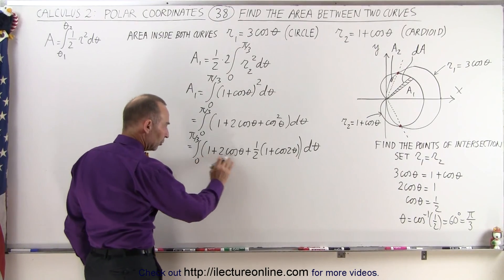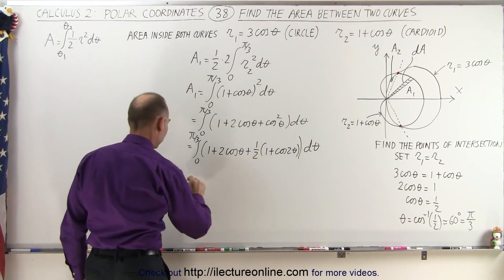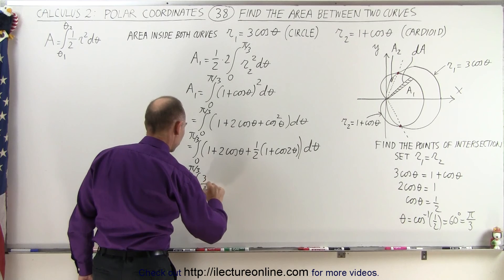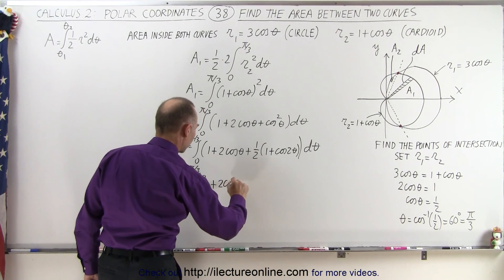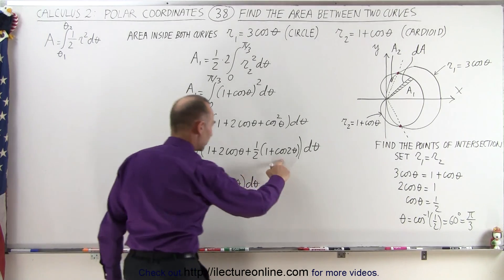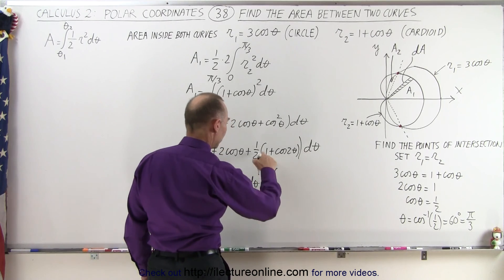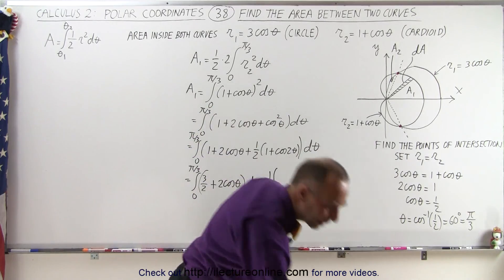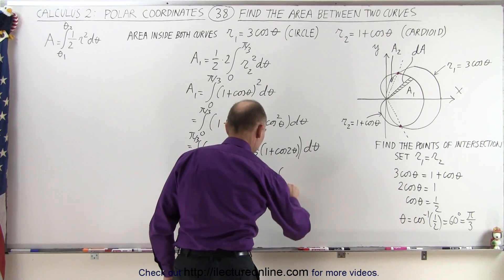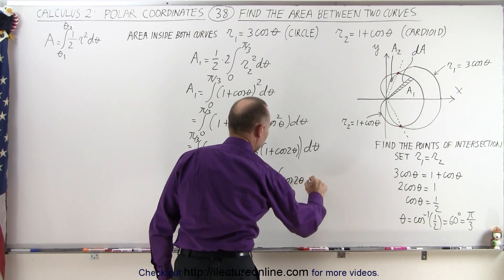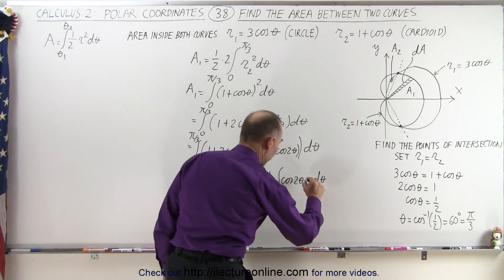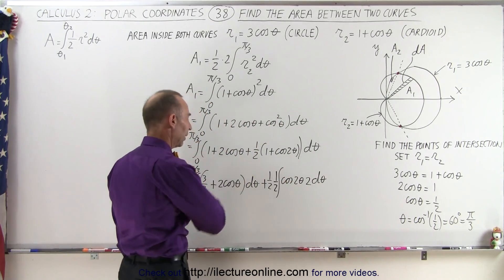We can combine the constant terms — 1 plus 1/2 is 3/2 — so this equals the integral from 0 to pi over 3 of (3/2 + 2 cosθ) dθ, which is easily integrated. Then we also have plus the integral of 1/2 times cosine of 2θ dθ. We need a proper differential there, so we multiply by 2 and divide by 2 to compensate.